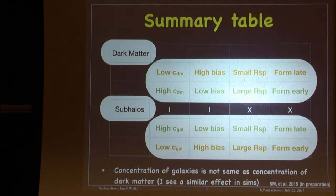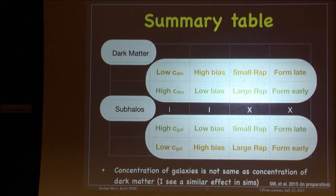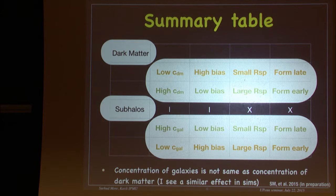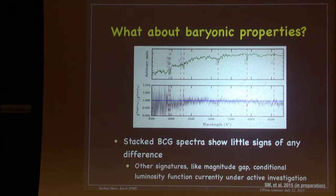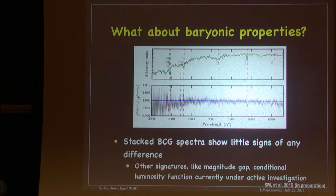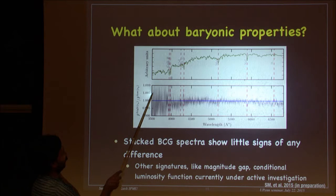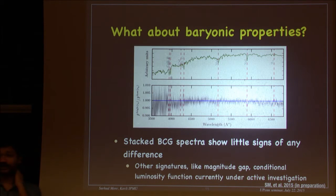When we make a cut on P_cen, we looked at the fraction of clusters leaving the samples — it is not that different. I have also looked at photometric properties. The stacked spectra of BCGs in the two cluster subsamples are shown here: the ratio is between 0.995 and 1.005, so there is very little difference.